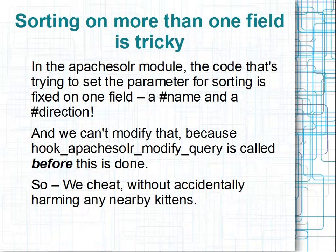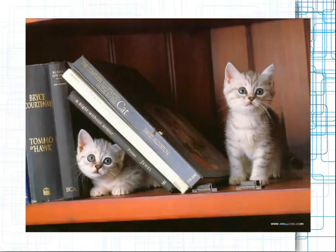Sorting on more than one field is tricky right now — Drupal core is set up only for sorting on one field at a time, and that's hard-coded into how the Apache Solr module tries to do the search: it wants one field with a sort name and a sort direction. Unfortunately the point where it's processing the sort name and direction is called after hook_apache_solr_modify_query. By the way, hook_apache_solr_modify_query is a useful hook that lets you mess around with how searches are being done. So we have to kind of cheat to sort on more than one thing at a time.